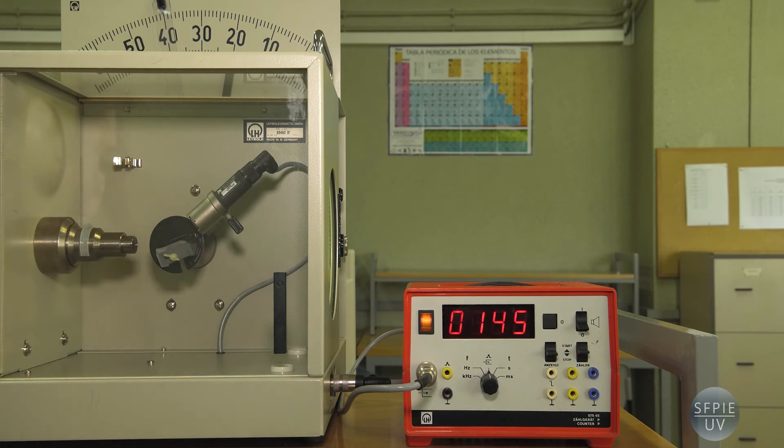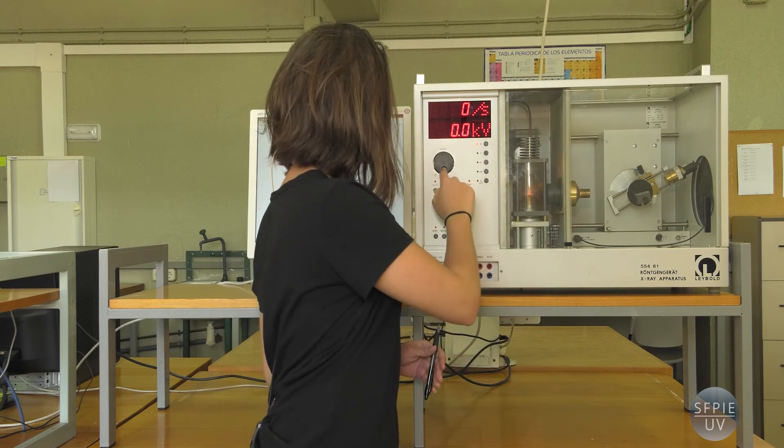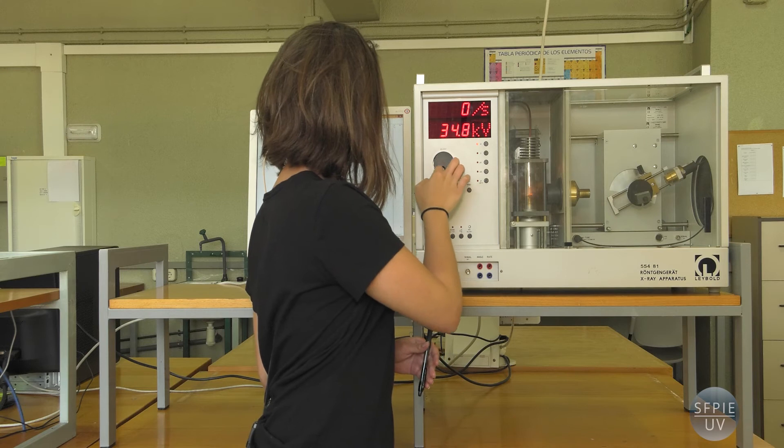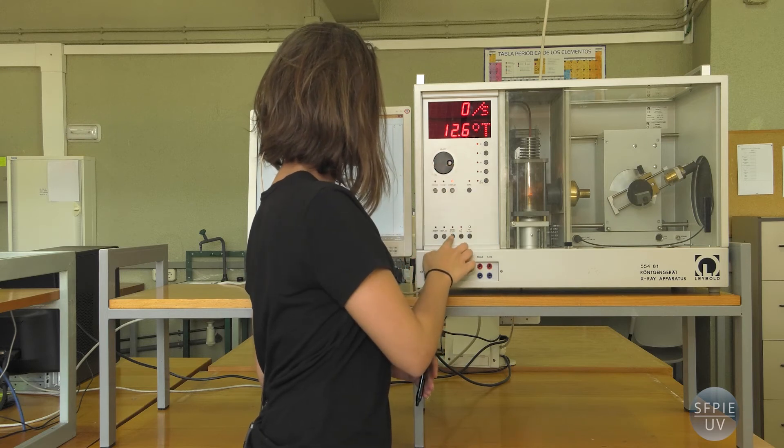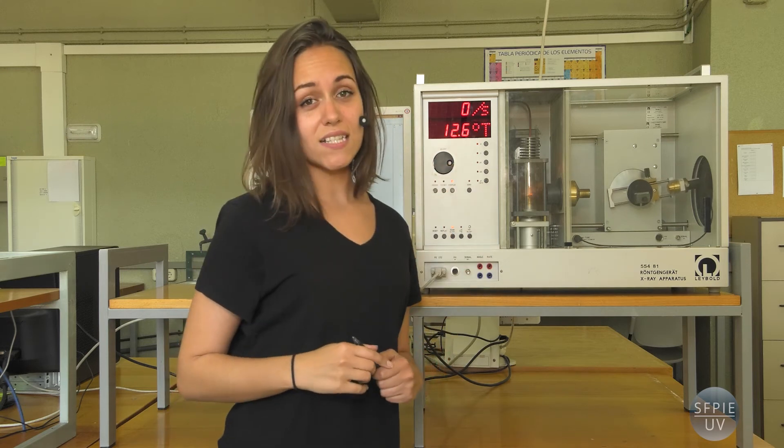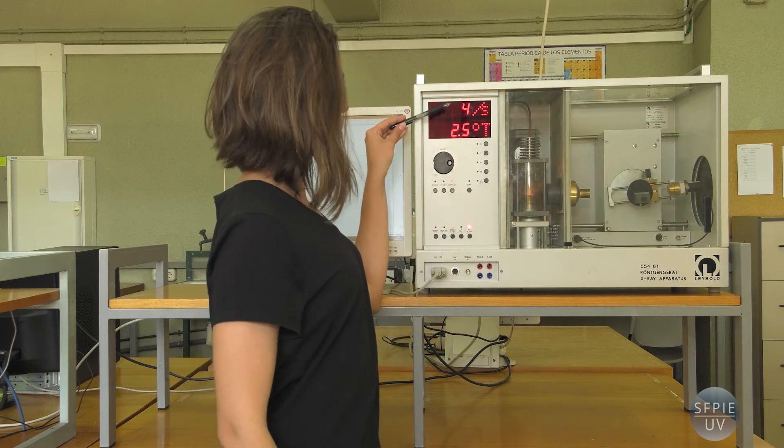Let's measure it. Let's hear it. Here we have a fully automated version of this experiment. We choose the acceleration voltage of the electrons and we start to measure the intensity for each angle.